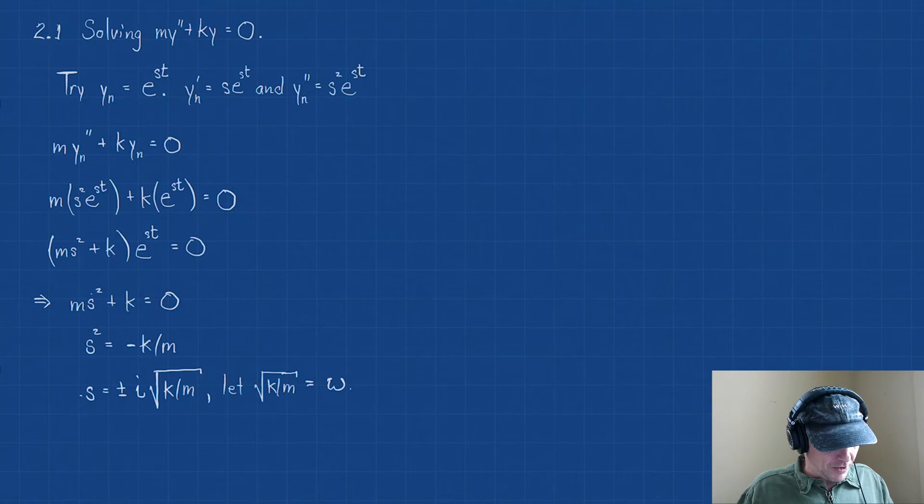So we're going to let √(k/m) = ω, just for the sake of clarity and simplicity in writing. So in other words, s = ±iω.